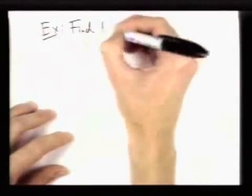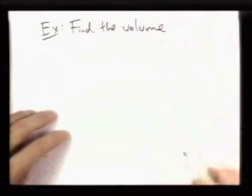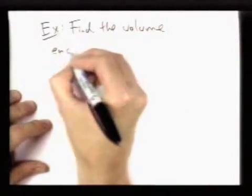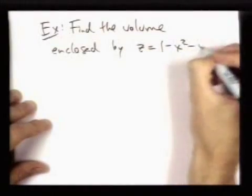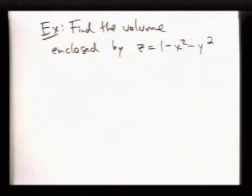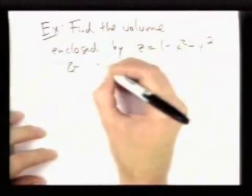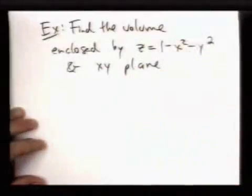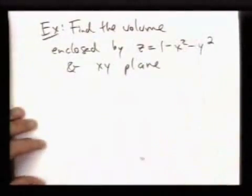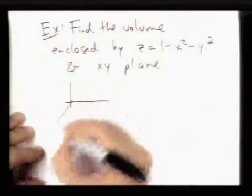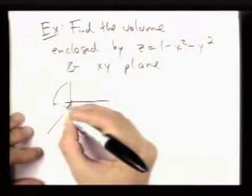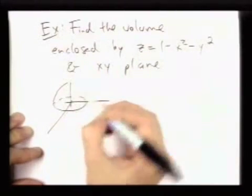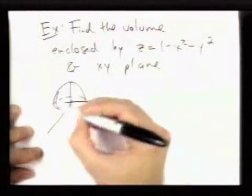So for example, say we want to find the volume enclosed by z equals 1 minus x squared minus y squared, and the xy plane. So this right here is an upside-down paraboloid, and the region that we get enclosed is just this dome shape.